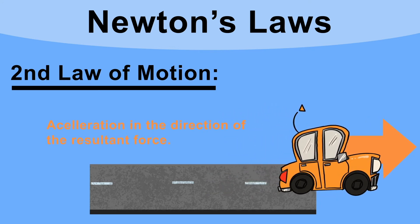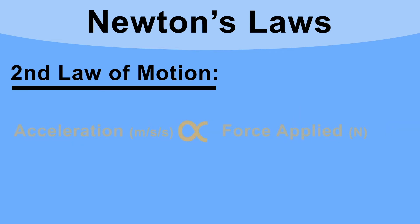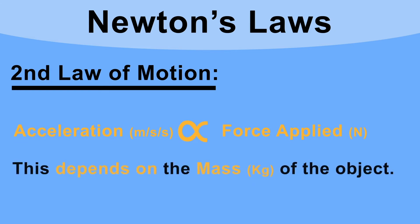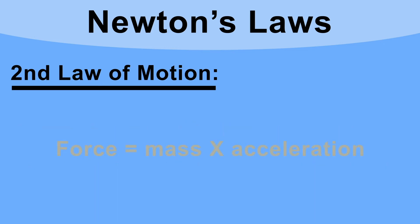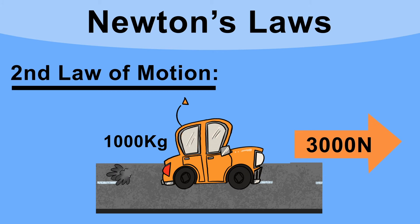A resultant force gives an acceleration in the direction of the force, but how big an acceleration? Newton found that acceleration is proportional to the force applied, but also depends on the mass of an object. The second law can be given as an equation: force equals mass times acceleration, or F = ma for short.